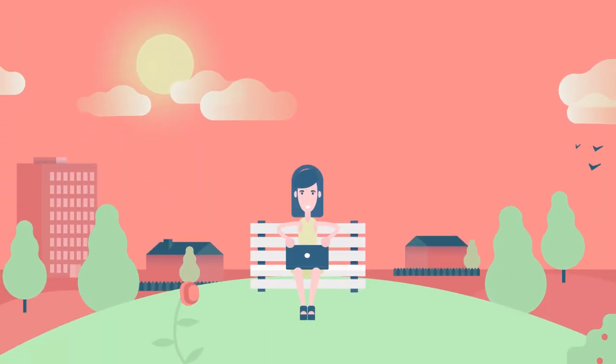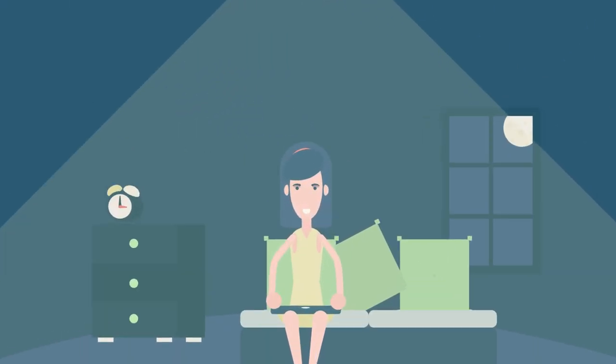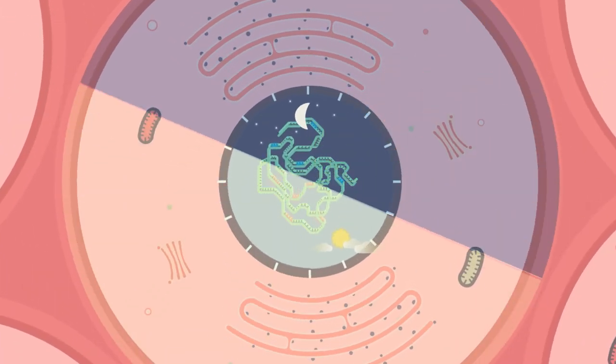You have probably felt that your body is in sync with the cycles of day and night. This is due to our inner circadian clock, a set of genes whose activity oscillates with daylight.